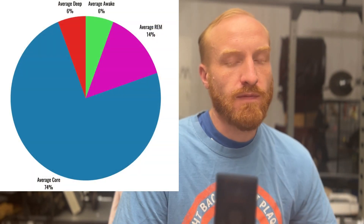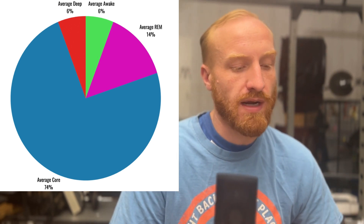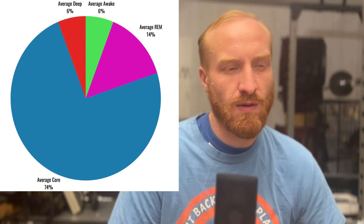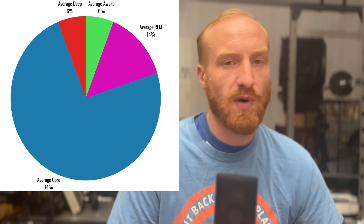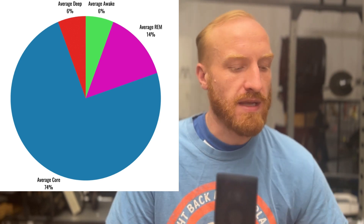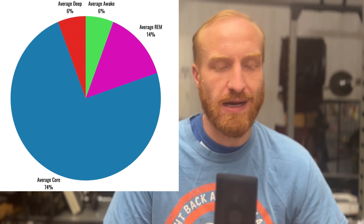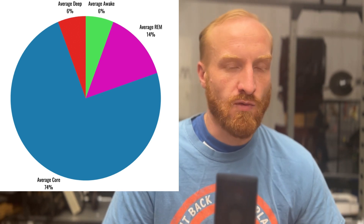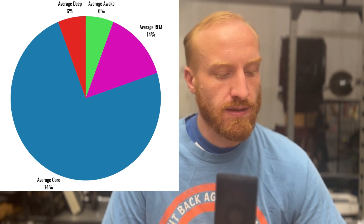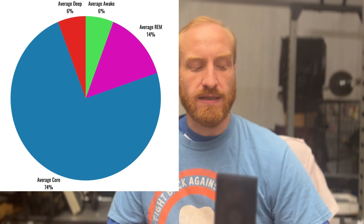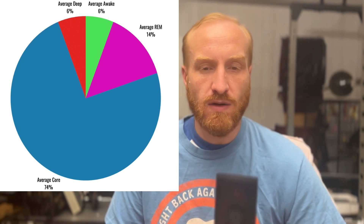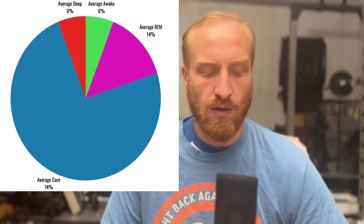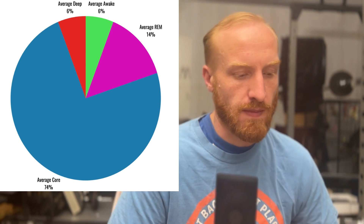Looking at the graph I generated based on my sleep patterns: I'm in bed for about 10 hours on average and I sleep for about seven hours and 10 to 20 minutes. Breaking it down — I spend about 6% of that time awake, roughly 29 minutes. I'm in REM sleep for about an hour and four minutes, or 14% of the time. I have about five hours and 42 minutes of core or light sleep, that's 74%, and 6% — about 30 minutes — is deep sleep.